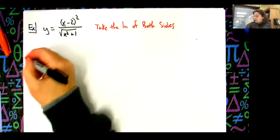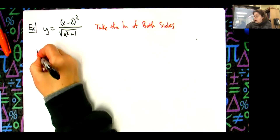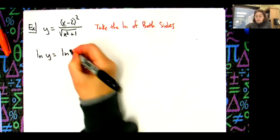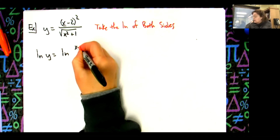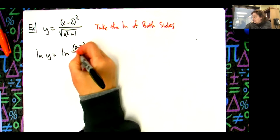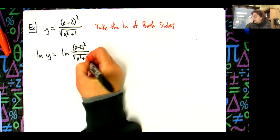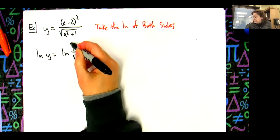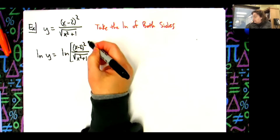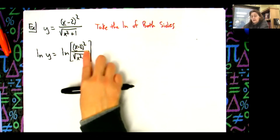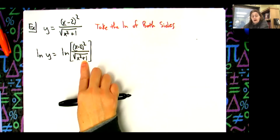So step one: take the natural log of both sides. Natural log of y equals the natural log of [(x minus 2) squared over the square root of (x squared plus 1)].